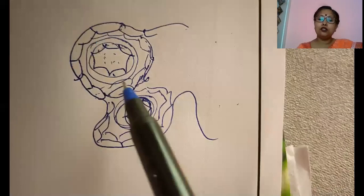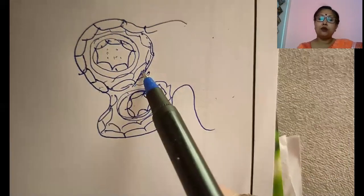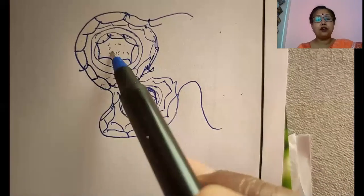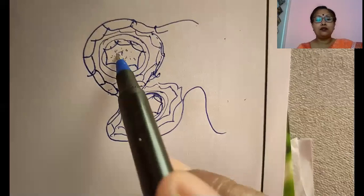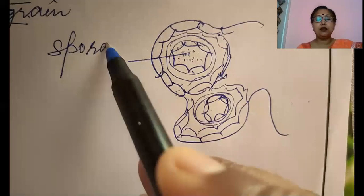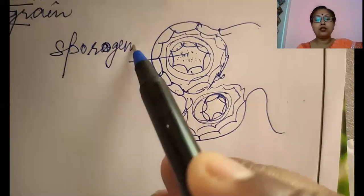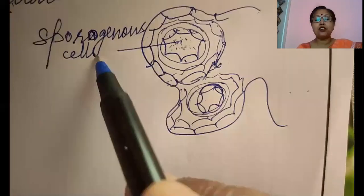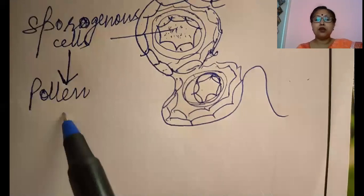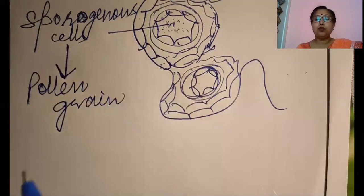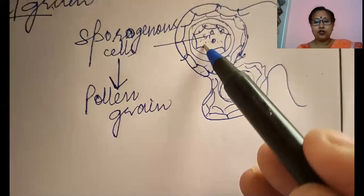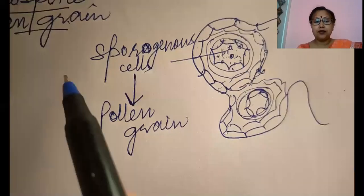All four layers compose the wall of the microsporangia. These are the sporogenous cells which further develop into pollen grains. These sporogenous cells are capable of performing meiosis, so we can also use the term meiocyte for them. They are diploid and further, after completing meiosis, they develop into pollen grains.